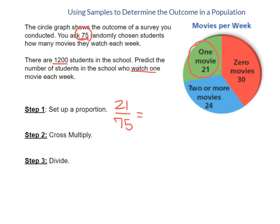Once I have 21 out of 75, then I'm ready to apply that to the population. We know that there are 1200 total students in the school, but we don't know how many out of 1200 like to watch one movie each week. So the second part of my proportion will be x over 1200. So my proportion is set up to be 21 out of 75 is how many out of 1200.